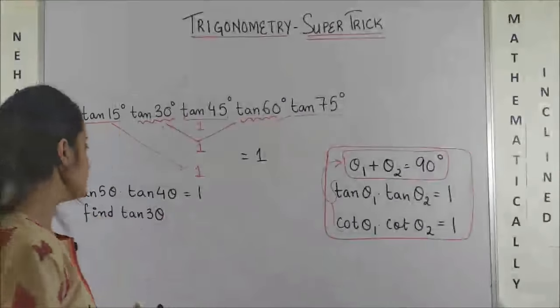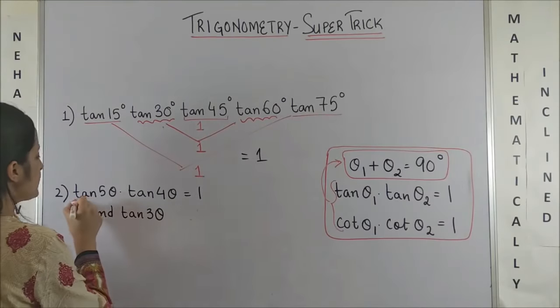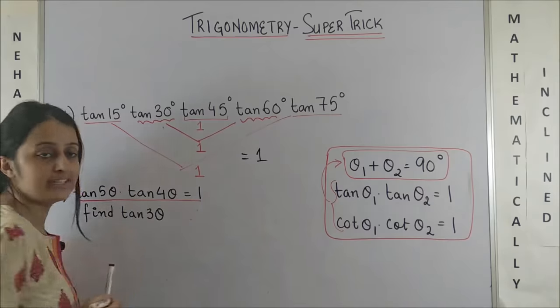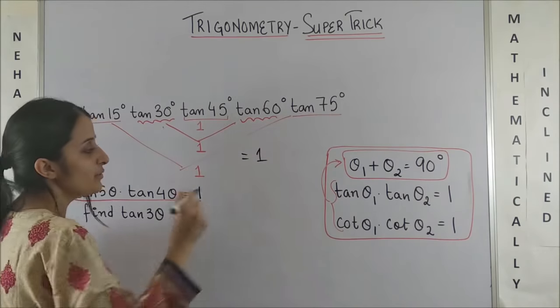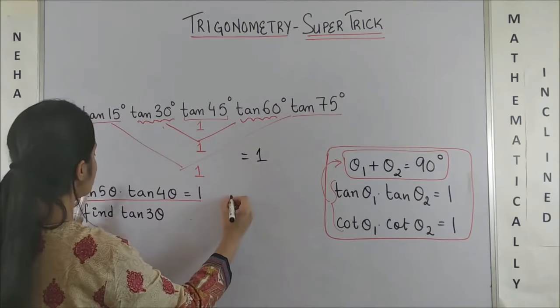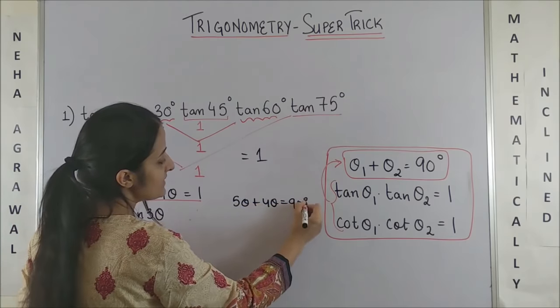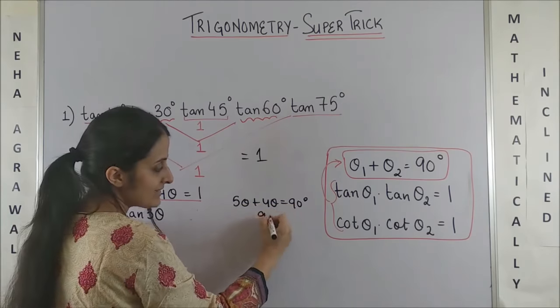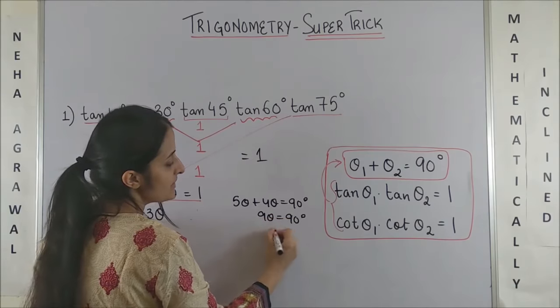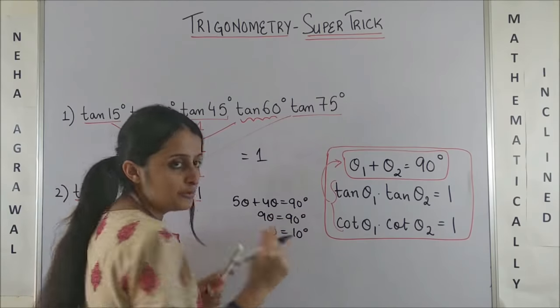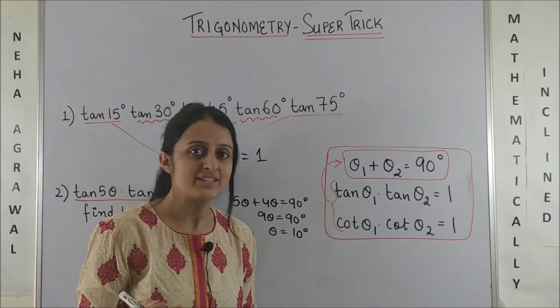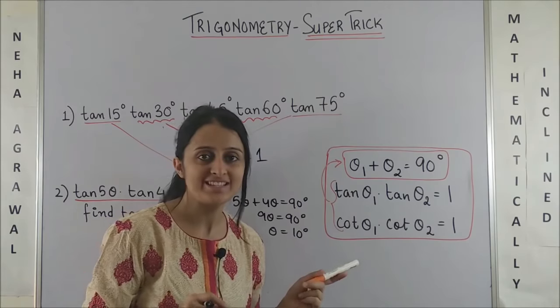Now, same way when you came across question 2 which said tan 5θ tan 4θ = 1. So, you know if the product is 1, then also 5θ + 4θ would be equal to 90°. This tells you 9θ = 90°, and this means θ = 10°. You know when you are in a competitive setup you don't have to show all these steps.